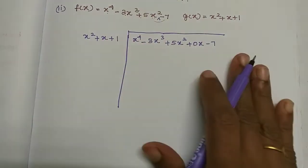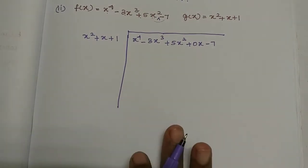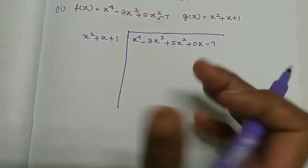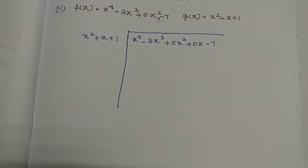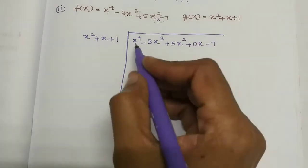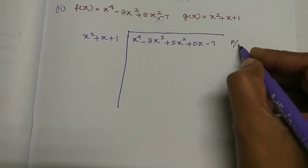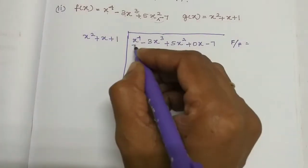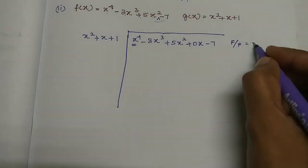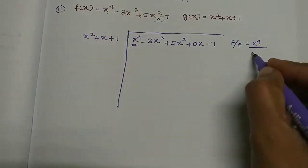We need to check the polynomial. We have x power 4, x power 3, x power 2, but x power 1 is missing. So if we have x power 4, we need to insert 0x for the missing term. So the polynomial becomes x power 4 minus 3x cube plus 5x squared plus 0x minus 7.